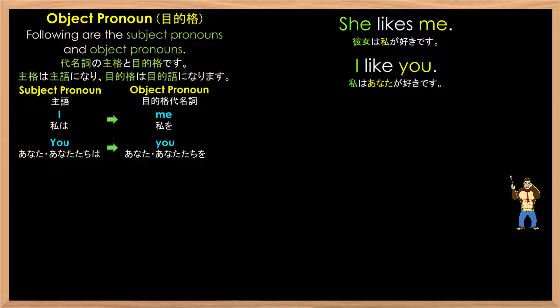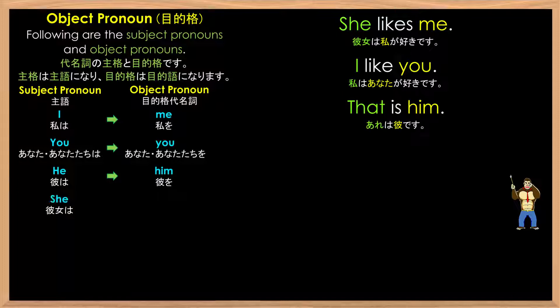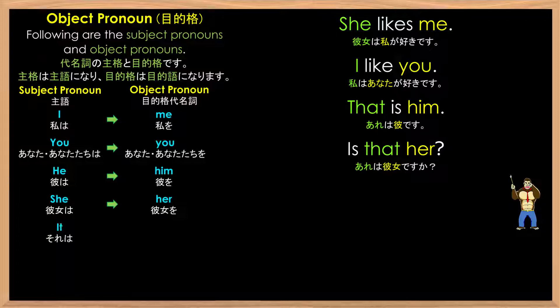Next we have he, which changes to him, as in 'that is him.' Next we have she, which changes into her, as in 'is that her?' Next we have it, which doesn't change — it stays it, as in 'I will eat it.'